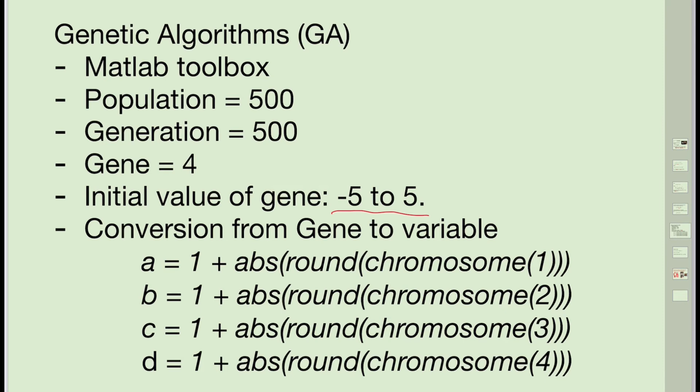Originally, the gene values can be negative or decimal values. Therefore, when we extract chromosome 1 to assign to a, we need to: number one, round to ensure it is without decimal value; number two, apply abs function to make sure it is a positive value; and number three, plus one to ensure it is minimum one. We do the same for the second gene to get b, the third gene to get c, and the last gene to get d.